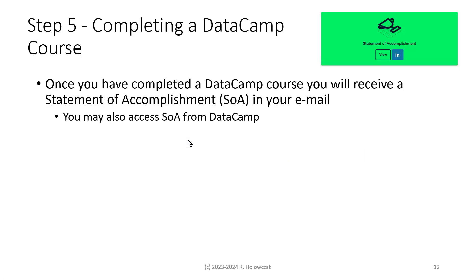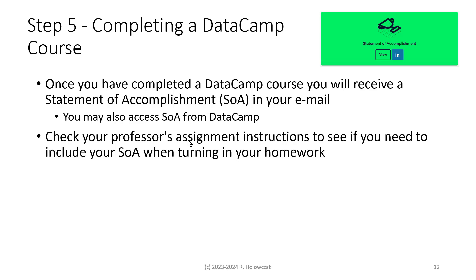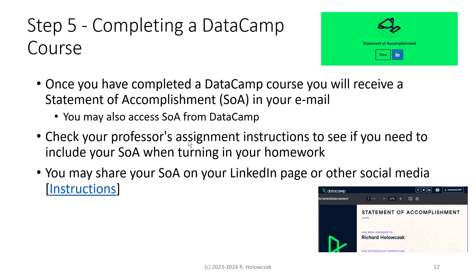Step 5: what happens when you complete a DataCamp course? Once you've completed your course, you will receive a Statement of Accomplishment — abbreviated as SOA. You'll receive this in your email, and you may also access it from within DataCamp. Check your professor's assignment instructions to see if you need to include your SOA when turning in your homework. You may share your SOA on your LinkedIn page or other social media. The Statement of Accomplishment will show your name, the name of the course, and when you completed it — so please make sure you fill in your name.